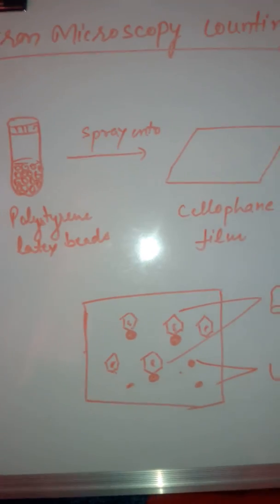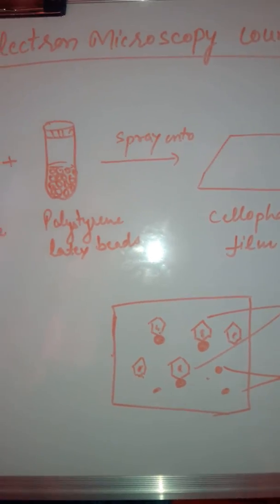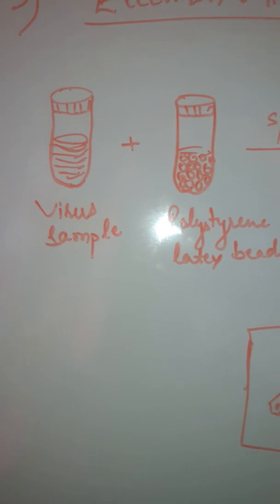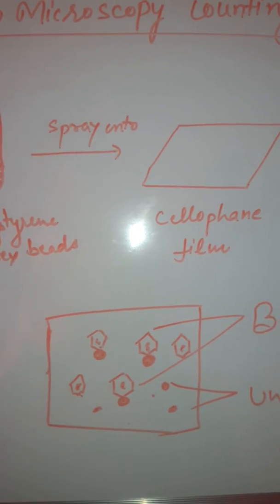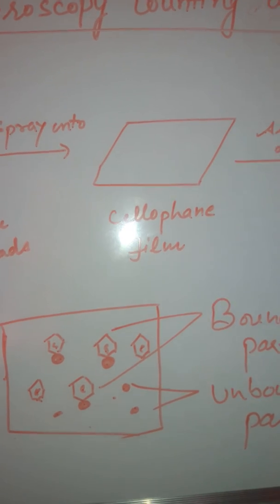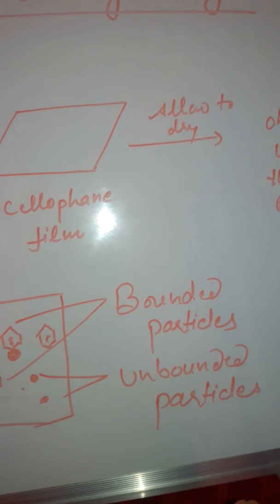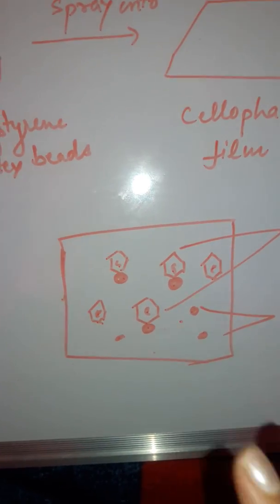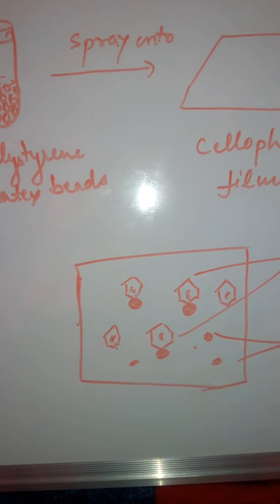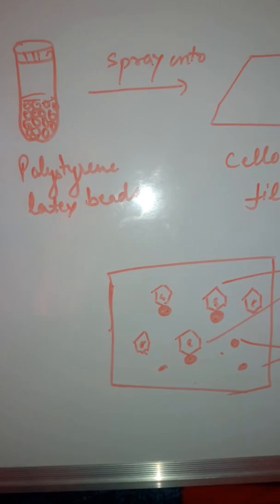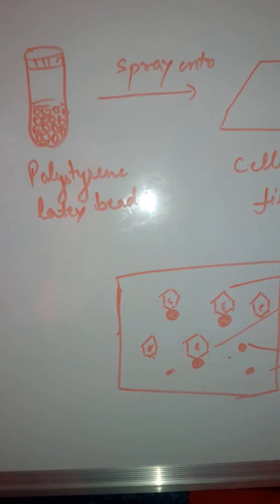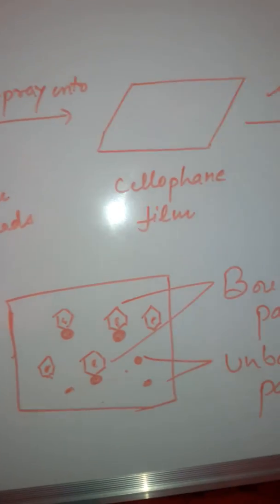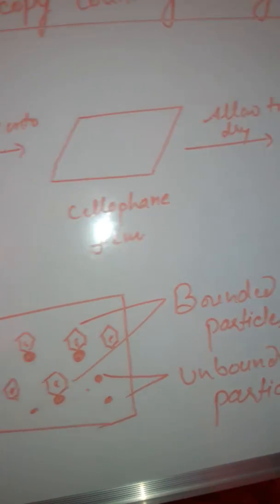Next is the electron microscopy counting assay. Here we count virus particles under the electron microscope. The virus sample is mixed with polystyrene latex beads, and this mixture is spread onto a cellophane film, allowed to dry, and observed under the electron microscope. The virus particles get attached to the latex beads. For the assay, dilutions of the virus sample are prepared, each dilution is mixed with polystyrene latex beads, sprayed on the cellophane film, allowed to dry, and observed under electron microscope.